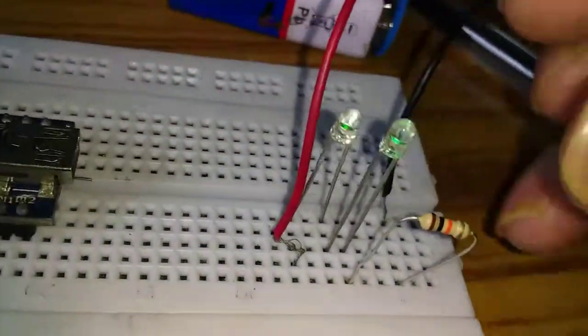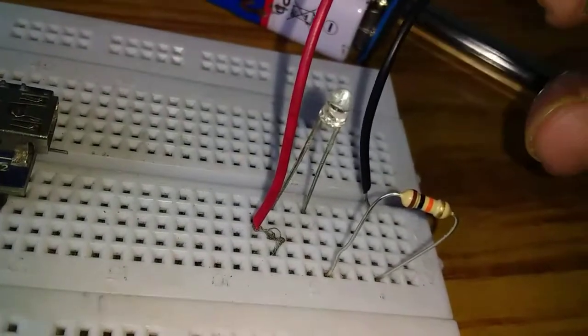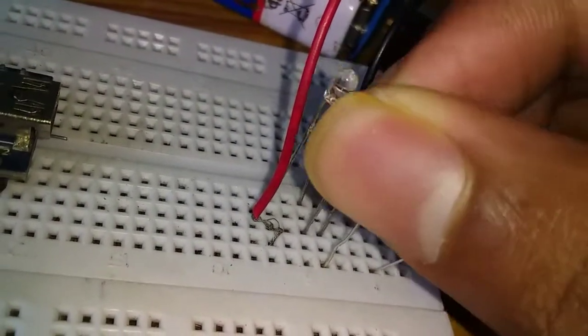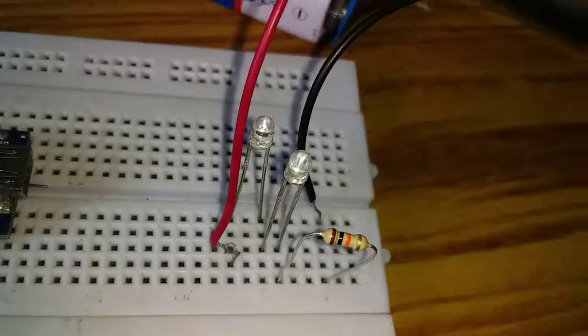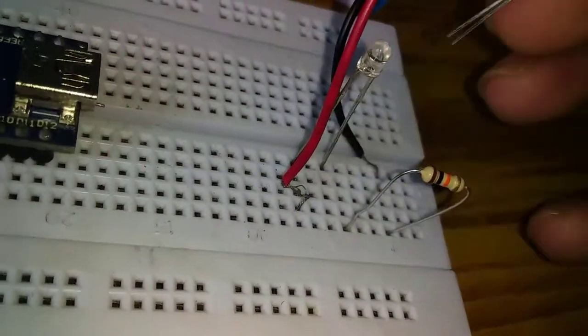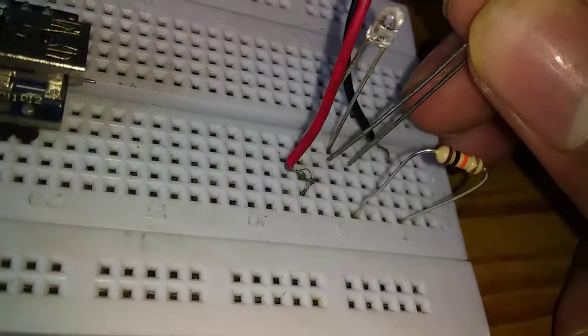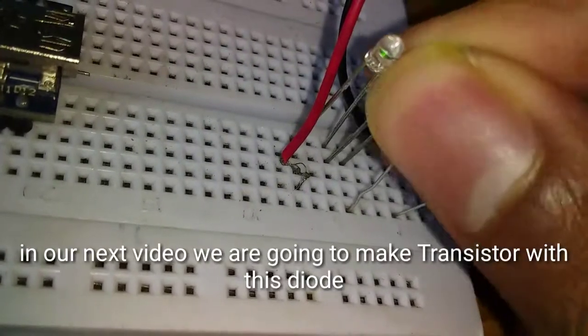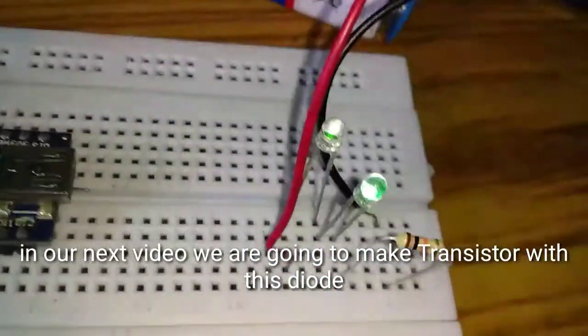Now we're going to connect the reverse bias and connect the two LEDs. Now we're going to connect the diodes in reverse bias. The conductor is going to be insulated.